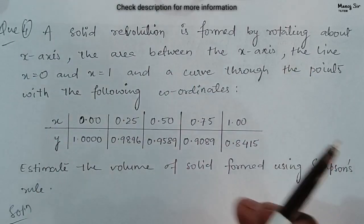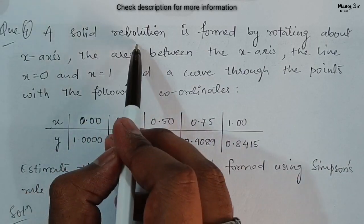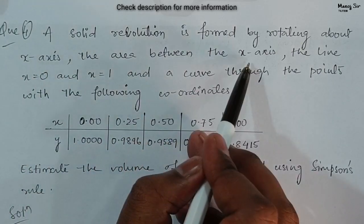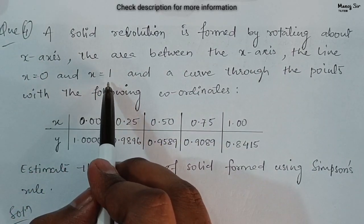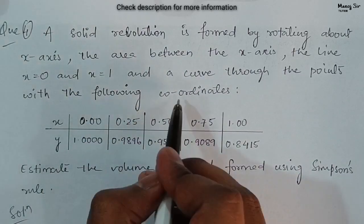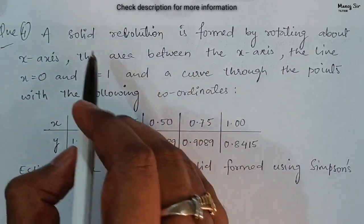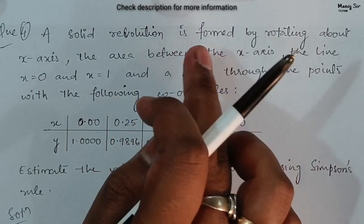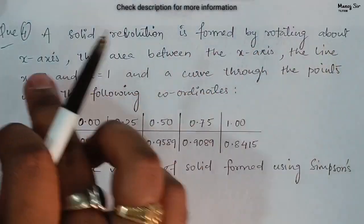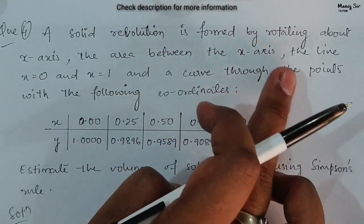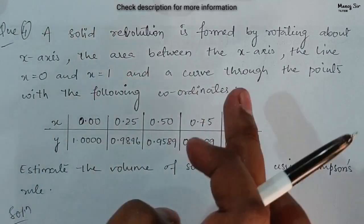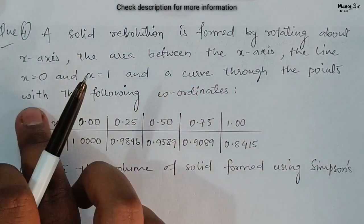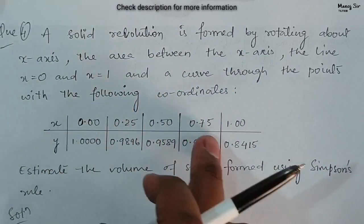So let us start with this beautiful problem. The question says: a solid of revolution is formed by rotating about the x-axis the area between the x-axis, the line x equal to 0 and x equals to 1, and a curve through the points with the following coordinates. The line is between x equal to 0 and x equals to 1.